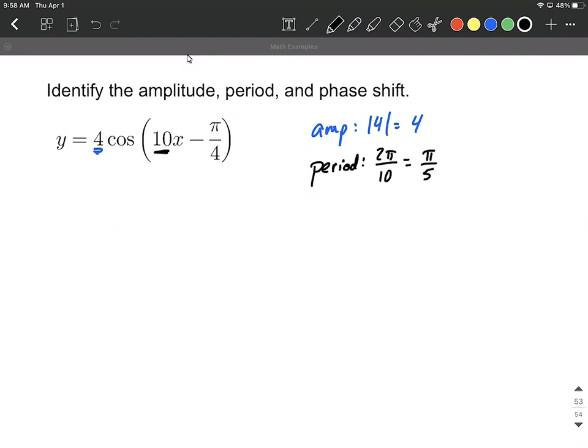Finally we want to find the phase shift of this. The phase shift is going to be this number divided by this number in the middle. Or a little bit easier way to think about this, I always like to factor these first.